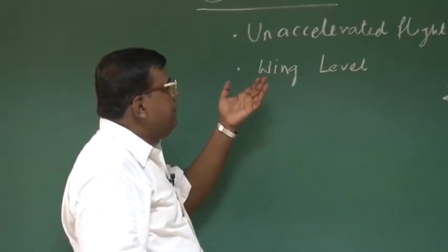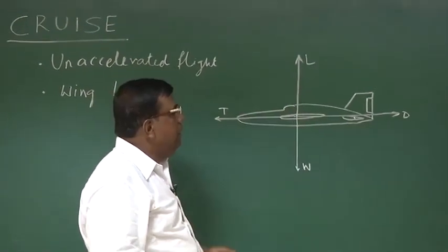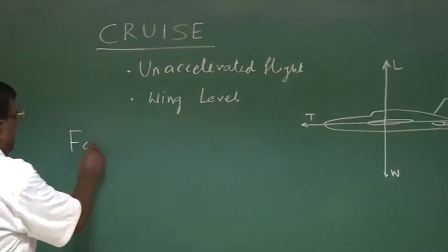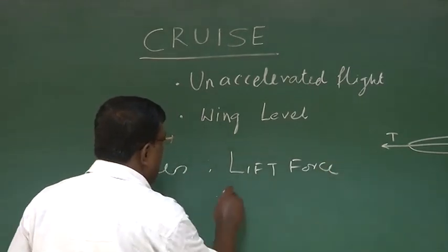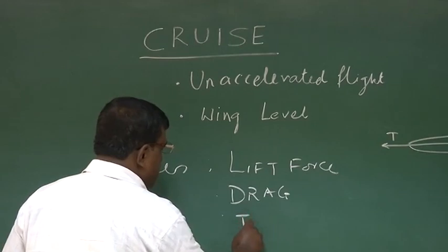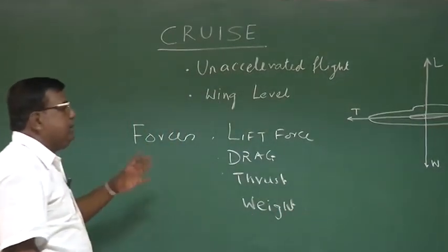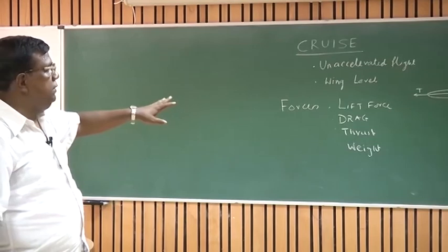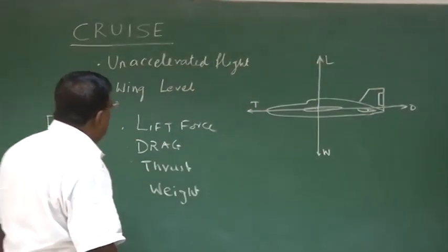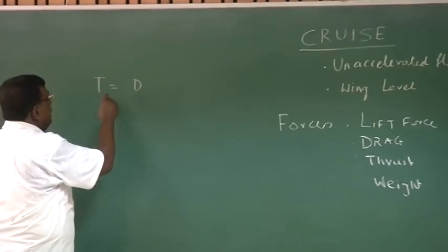When I say unaccelerated flight, we mean that the net forces are balanced. The forces acting on the airplane are lift, drag, thrust, and weight. The whole performance exercise — understanding the performance of the airplane — is focused towards these four forces. If this aircraft is going in unaccelerated flight, then I can write thrust equal to drag, and lift equal to weight.